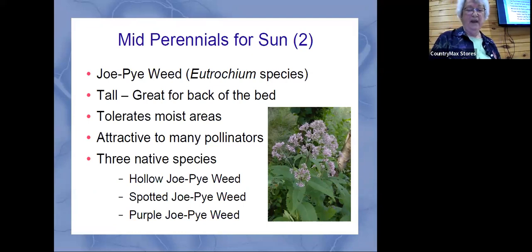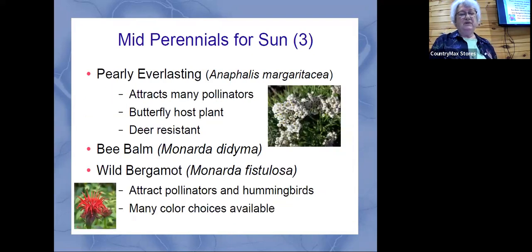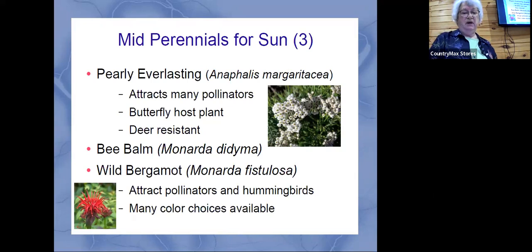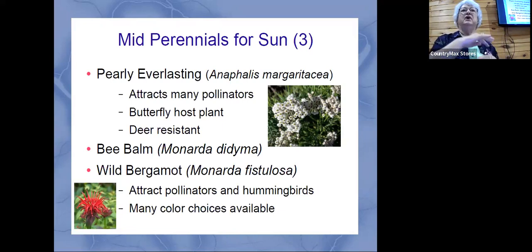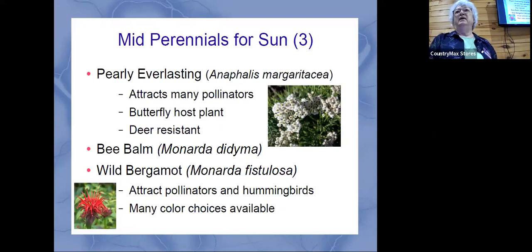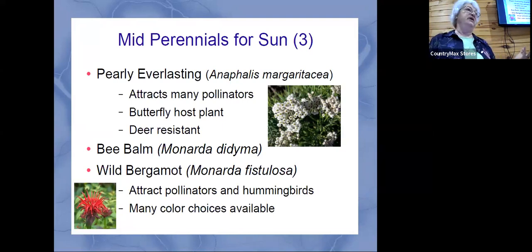Some other unusual perennials include pearly everlasting, which I wasn't really familiar with. Bee balm is quite common — mildew can be a problem with bee balm. To keep mildew down, try to keep the leaves dry when watering: water at ground level, water early in the morning so the leaves don't get wet. If you water in the afternoon and the leaves get wet overnight, the temperature drops and that causes mildew. It doesn't really harm bee balm — they just don't look nice, but they come back the next year.